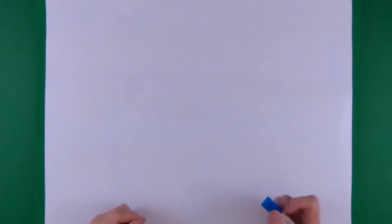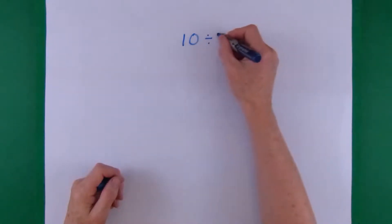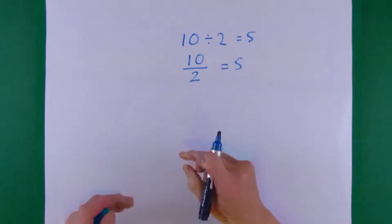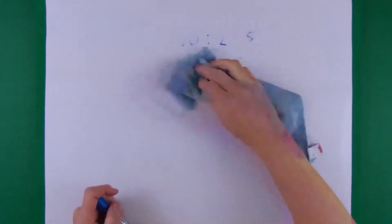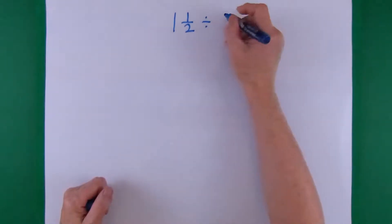I'll now show you why we turn the second fraction upside down using the square pizzas. You don't need to know this. It's here just for interest. Before I show you, you have to know that we can write 10 divided by 2 equals 5 as 10 divided by 2 equals 5. Because we're going to use that form in the middle of our calculation. So the one that we're going to do here is 1 and a half divided by 4 fifths.